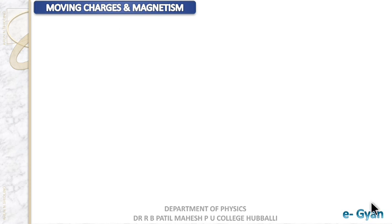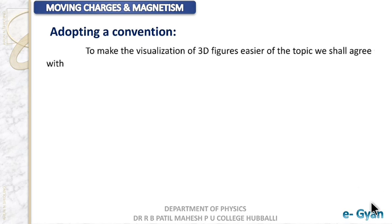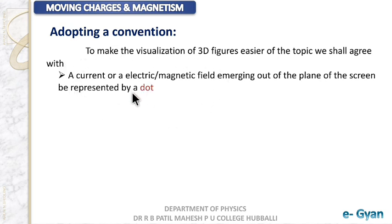Before we proceed, let us establish a convention followed when we have three-dimensional figures in this chapter. The first convention is to use a dot to represent current, electric field, or magnetic field when they are emerging out of the plane of the screen — that is, coming towards us. A dot is the symbol for this.